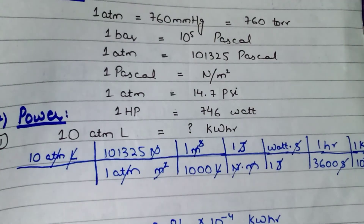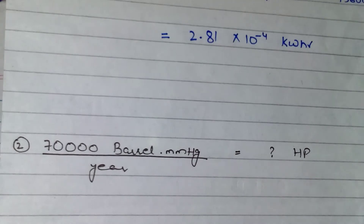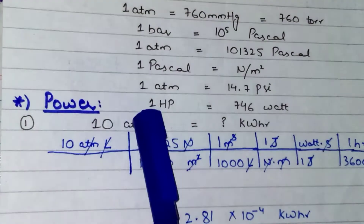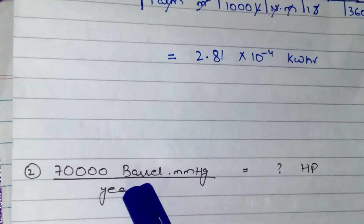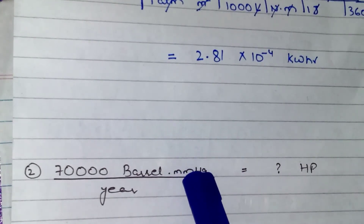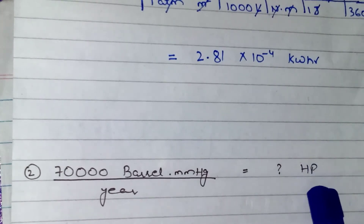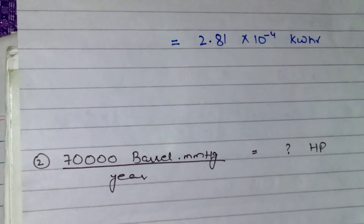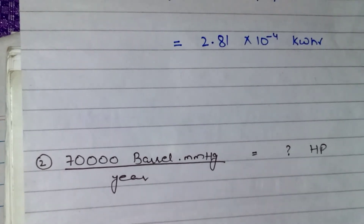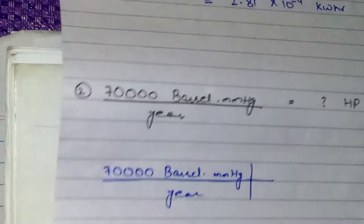The second question is: how many hp will there be in 7000 barrel·mmHg per year? For this question we will require the power conversion. This barrel is the unit of volume, whereas mmHg is the unit of pressure, year is time, and we have to convert this unit to hp, which is the unit of power. So our first step is to write it like this: 7000 barrel·mmHg per year.